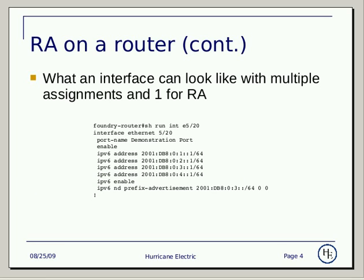For an example of what this interface might look like with multiple allocations and using one of them for router advertisements, this slide has example output. Here we have four /64s configured, and we've opted to use one of the ones in the middle to advertise with router advertisements.